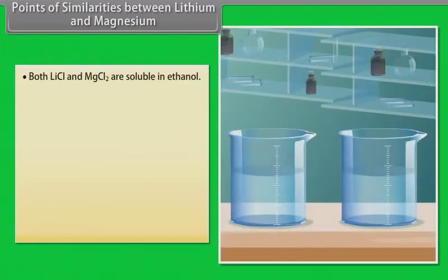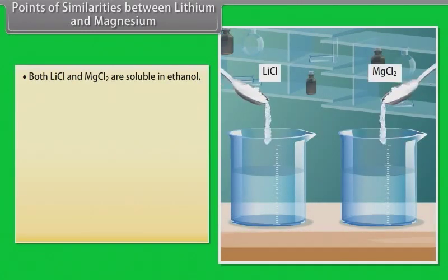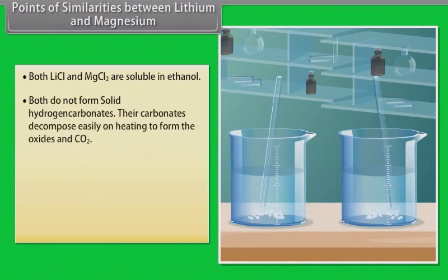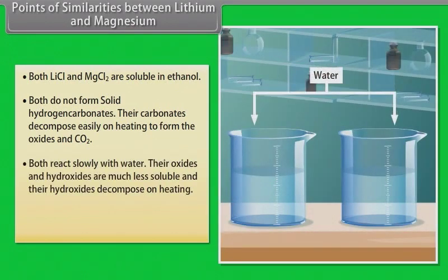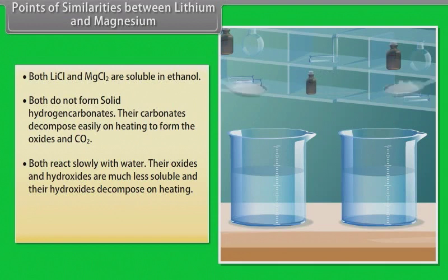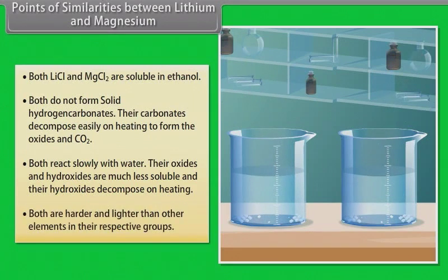Points of similarities between lithium and magnesium. Both LiCl and MgCl2 are soluble in ethanol. Both do not form solid hydrogen carbonates. These carbonates decompose easily on heating to form the oxides and CO2. Both react slowly with water. Their oxides and hydroxides are much less soluble and their hydroxides decompose on heating. Both are harder and lighter than other elements in their respective groups.